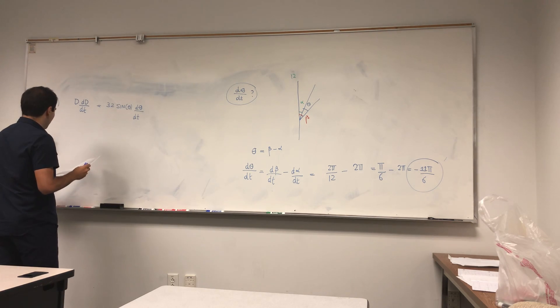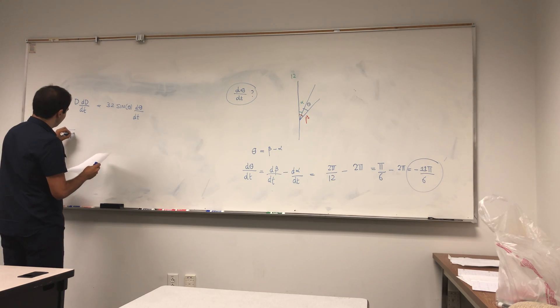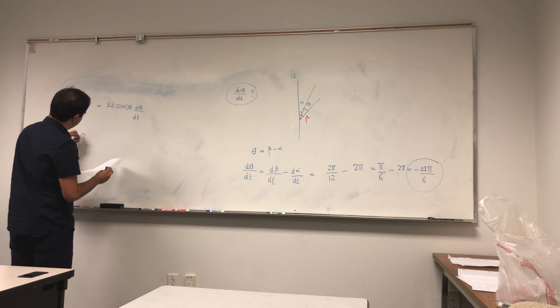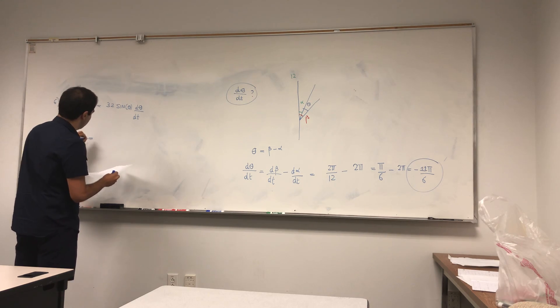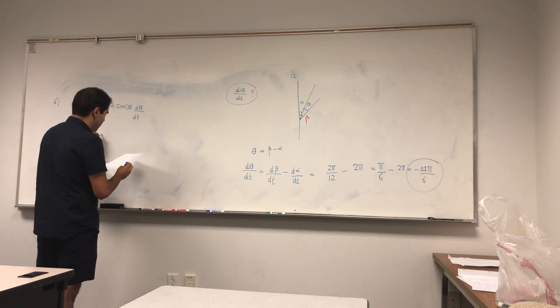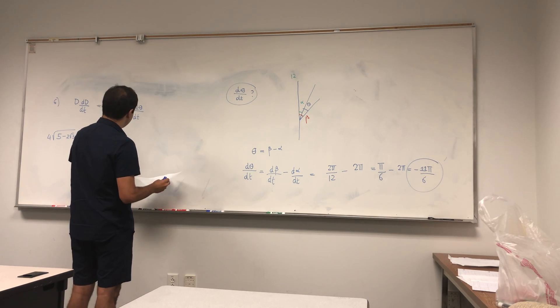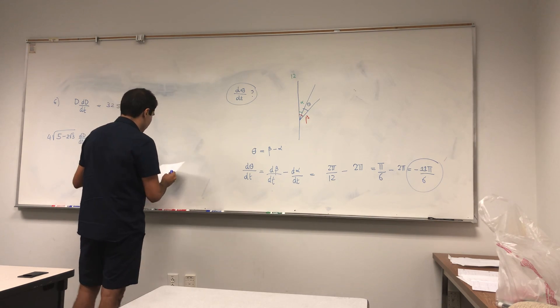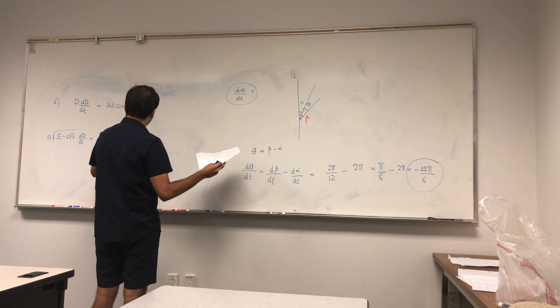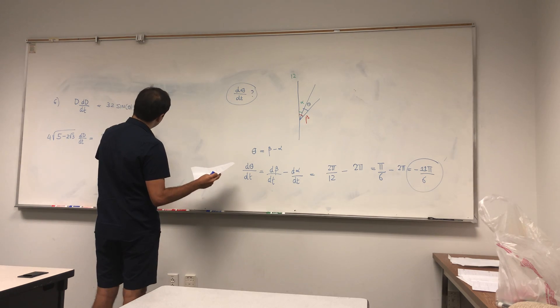So D we found to be 4 times square root of 5 minus 2 square root of 3. dD/dt is the stuff we wanted to find. 32 sine of theta was sine of pi over 6, which is 1 half, and d(theta)/dt was minus 11 pi over 6.